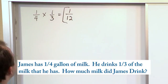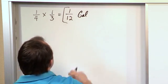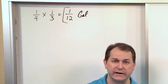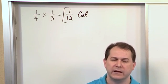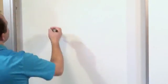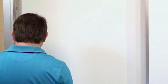So he actually drinks 1/12 of a gallon that day. Even though he has a quarter gallon, 1/4 of a gallon in the fridge, he only drinks a third of it. So he's drinking much less than 1/4 of a gallon, and that is 1/12.